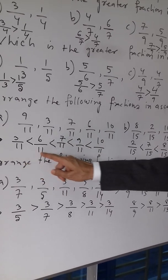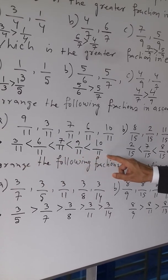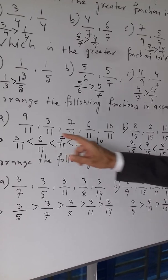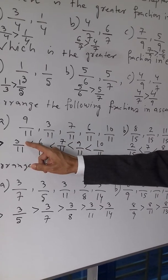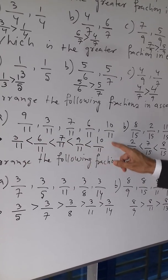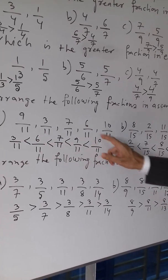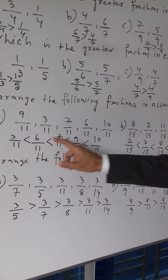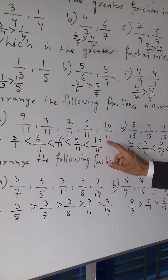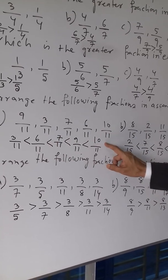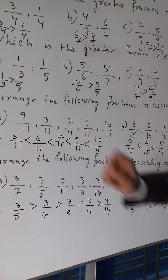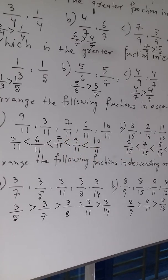All the denominators are same, so you have to see the numerator. The largest fraction is 10 by 11 and the least is 3 by 11. Now question number 4.